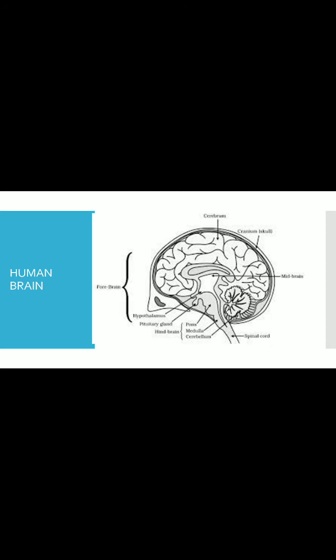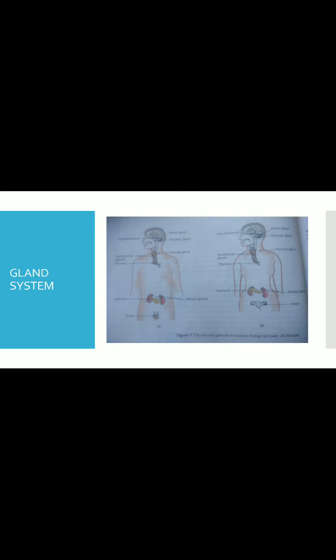And one more important diagram, that is human brain. So you have to practice the human brain along with the labeling. Gland system in male and female.